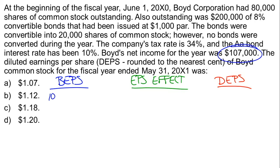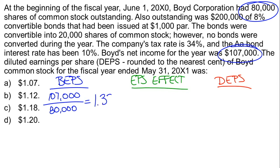We are told that net income is $107,000 and they had 80,000 shares outstanding. During the period everything was outstanding all year — the only issue was the convertible bond that had not been converted during the year, which is our diluted element. So our basic earnings per share is $1.33.